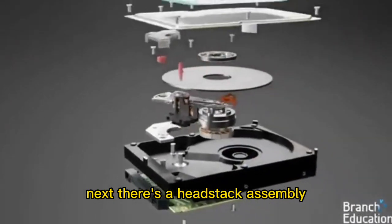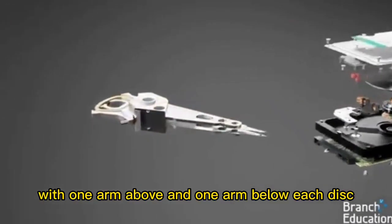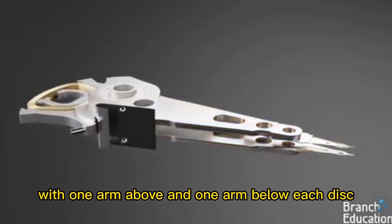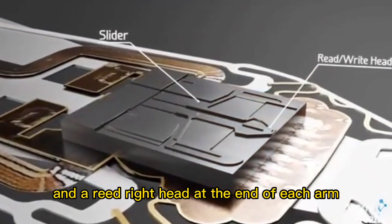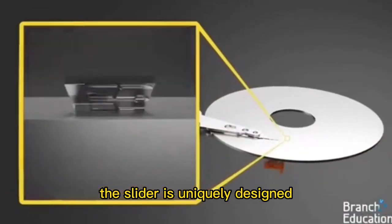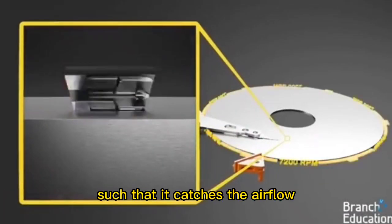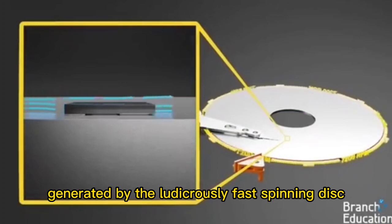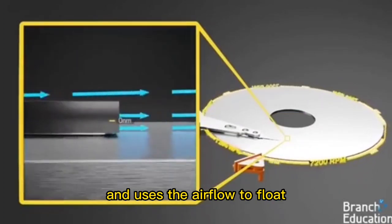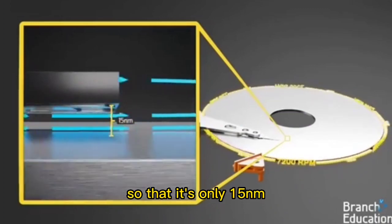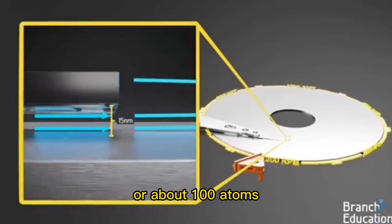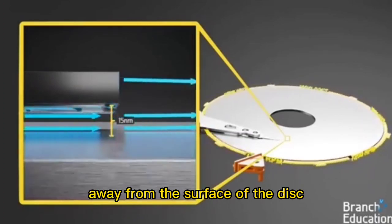Next there's a headstack assembly with one arm above and one arm below each disk and with a slider and a read write head at the end of each arm. The slider is uniquely designed such that it catches the airflow generated by the ludicrously fast spinning disk and uses the airflow to float or fly the read write head so that it's only 15 nanometers or about 100 atoms away from the surface of the disk.